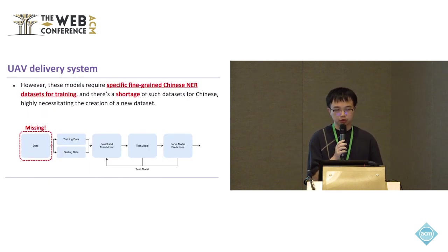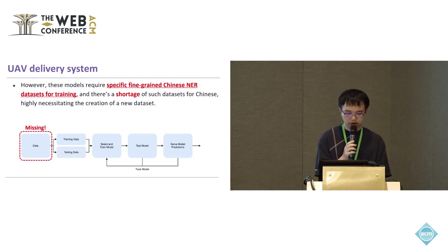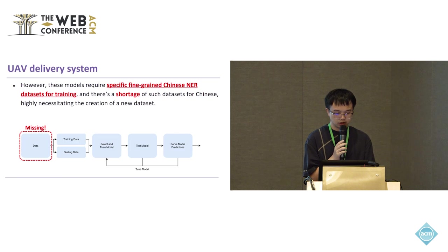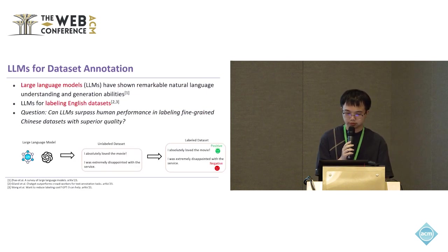The effectiveness of this NER model is dependent upon the availability of specific fine-grained Chinese NER datasets for model training. However, there is a shortage of such datasets in Chinese, highlighting the need for creating new datasets. Besides, in the context of Chinese NER, the challenge is further amplified due to the linguistic complexity of the Chinese language, which includes unique characters, tones, and contextual meanings that differ significantly from languages like English. This complexity necessitates datasets that are not only large but also annotated to capture the nuances and edge cases in Chinese.